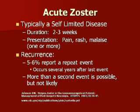Post-herpetic neuralgia starts with acute zoster. Acute zoster is typically self-limited — it lasts a couple of weeks, usually 10 to 20 days. It presents with pain, and usually the pain is prodromal to the rash. Patients can also have some fever and malaise before the rash appears. Patients can have recurrence of zoster — there's a 5 to 6 percent incidence of recurrence — but it usually occurs several years after the first event. A subsequent recurrence is possible but not very likely.